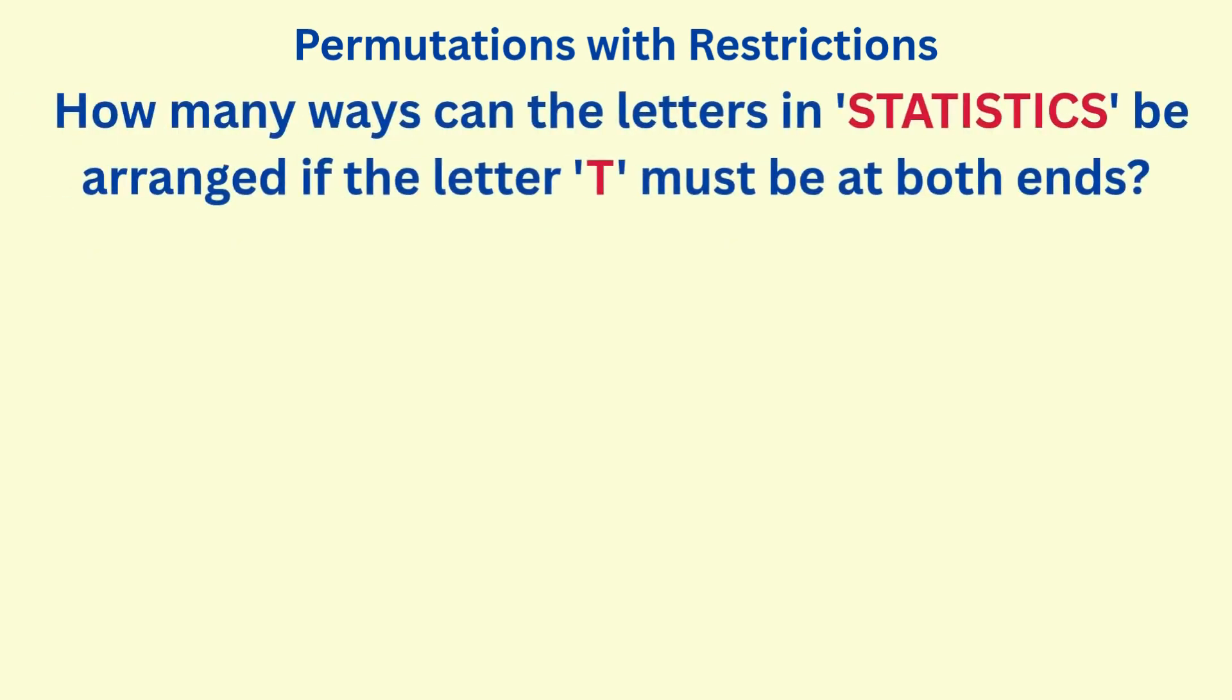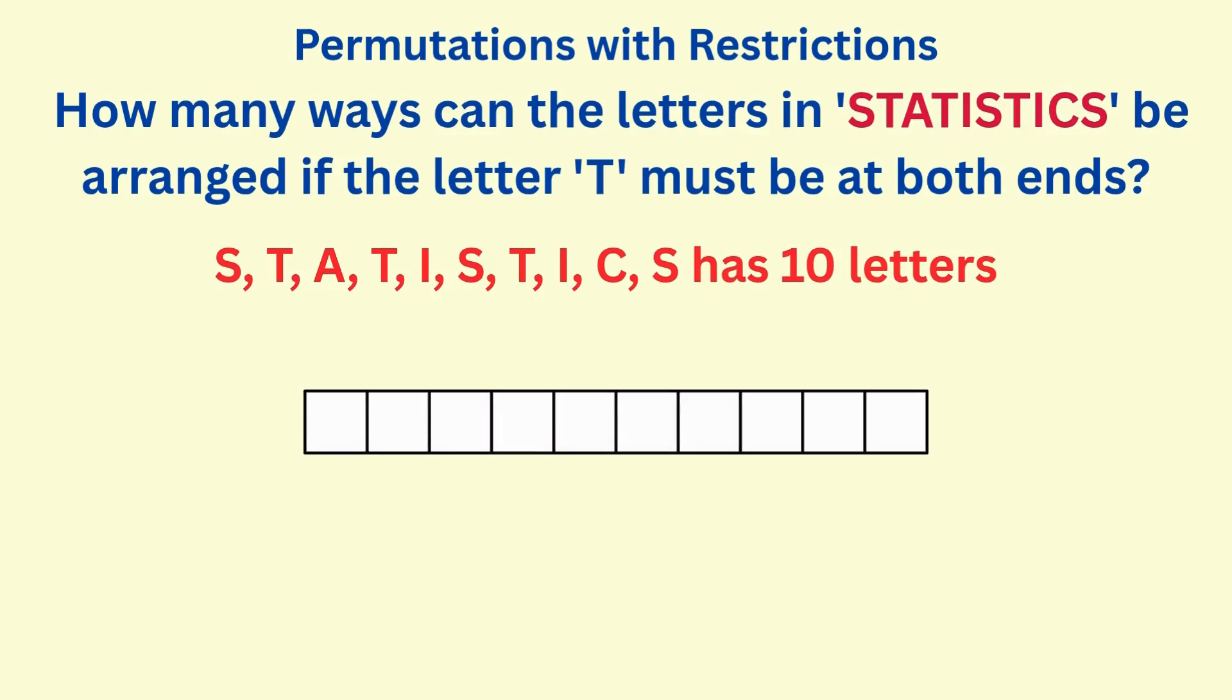How many ways can the letters in statistics be arranged if the letter T must be at both ends? The word statistics has 10 letters, and the given restriction is the first and last letters must be T. Since the letter T must be at both ends, we fix the first and last positions with T's.